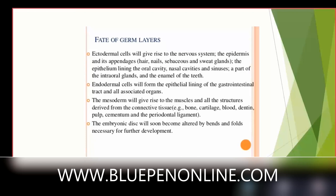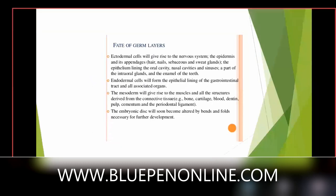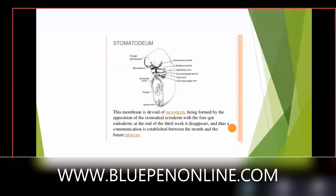In the tooth, only enamel is formed by ectoderm; the rest is formed by mesoderm. The embryonic disc soon becomes altered by bends and folds necessary for further development. There is something called the stomodeum, which is the primitive mouth — a small opening. This opening gives rise to the frontal nasal process, medial nasal process, and lateral nasal process, which fuse together to form the nose, mouth, lip, and tongue. The stomodeum is formed by opposition of ectoderm with the foregut endoderm; at the end of the third week it disappears, establishing communication between the mouth and the future pharynx.